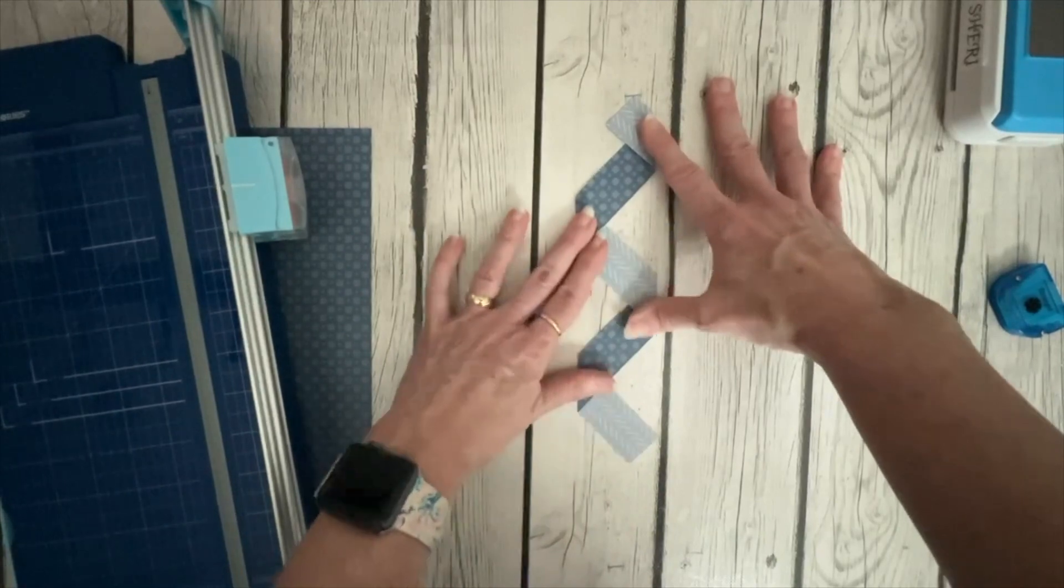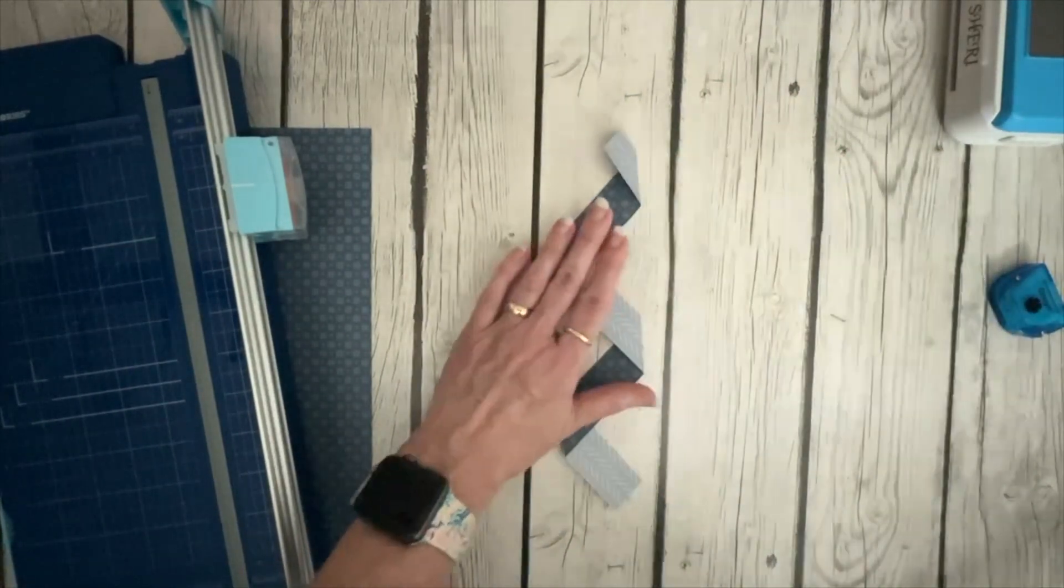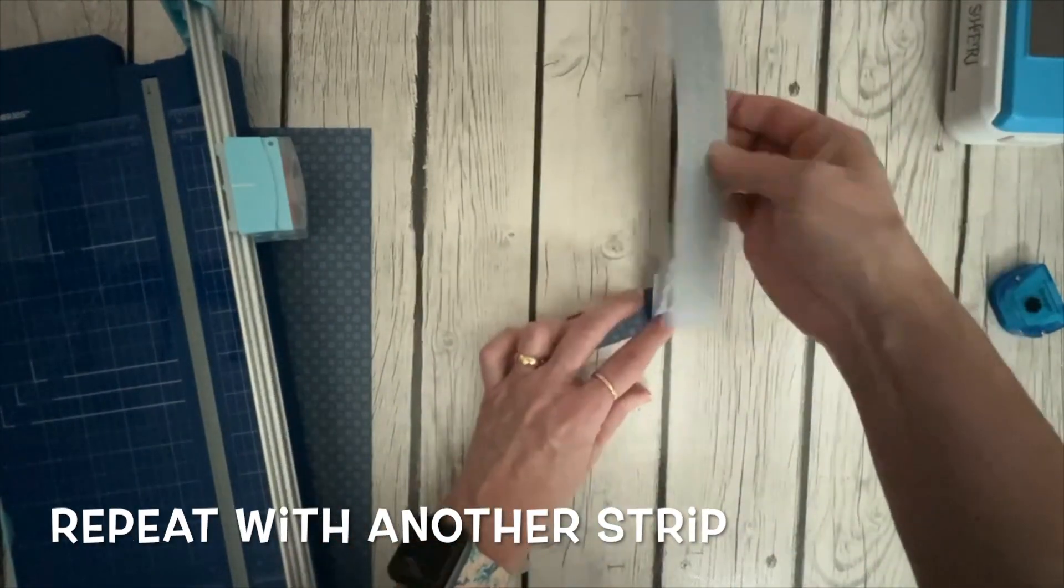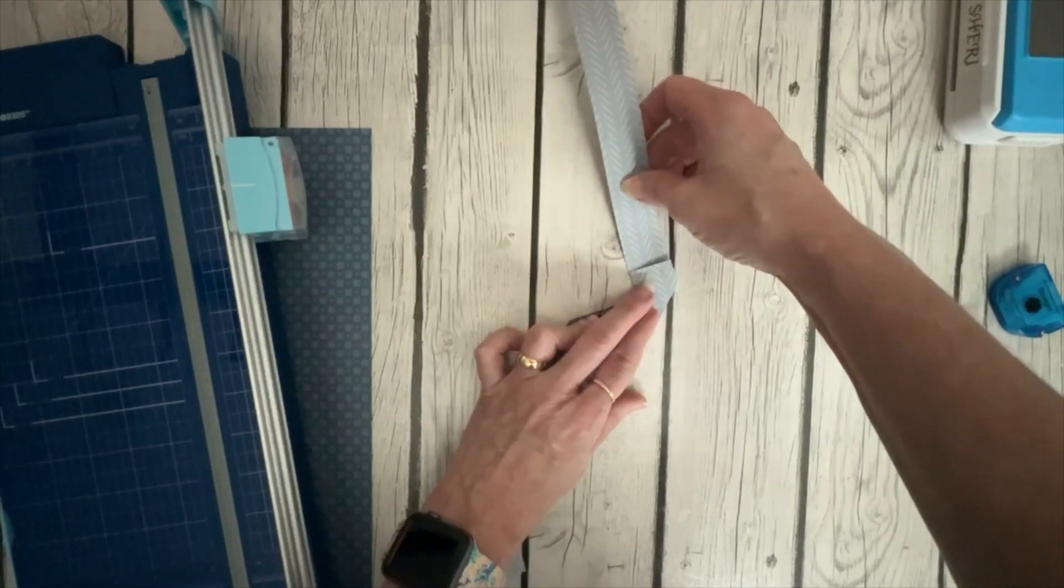Now obviously this is not going to be long enough to go all the way down a 12 inch piece of paper. So you'll take another strip and do the same thing and then you can just piece those strips together underneath that.